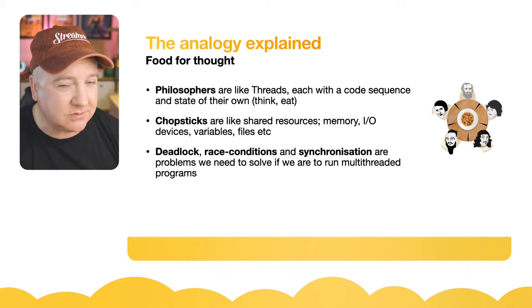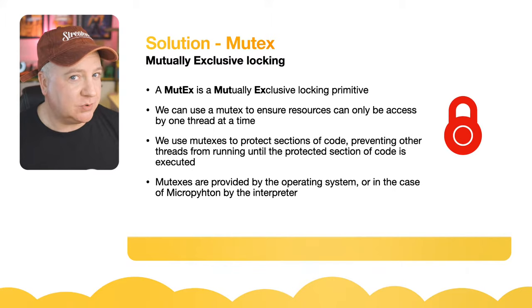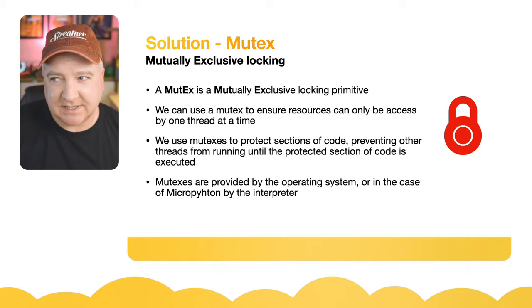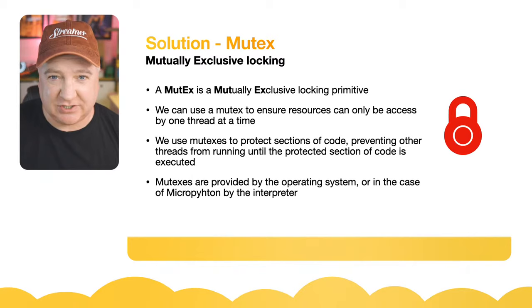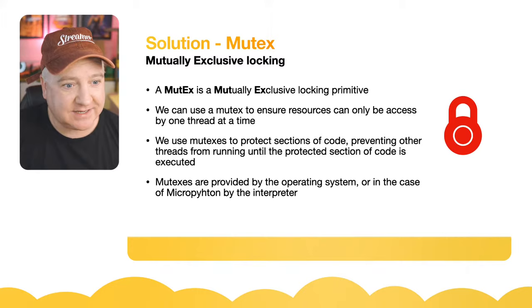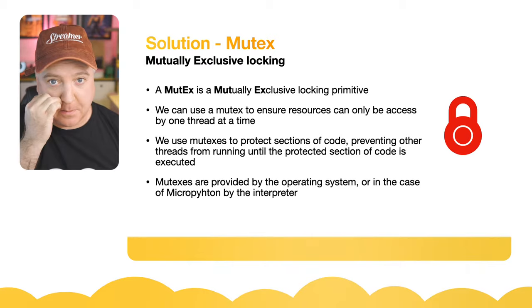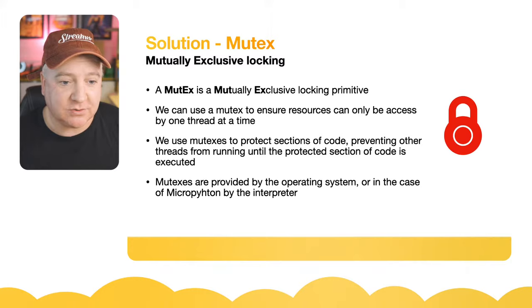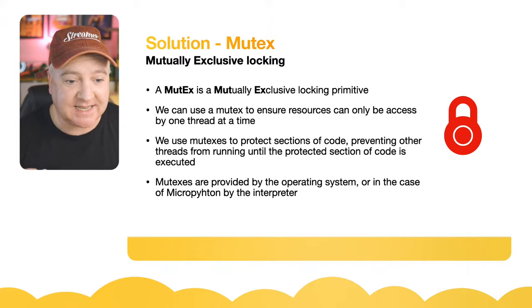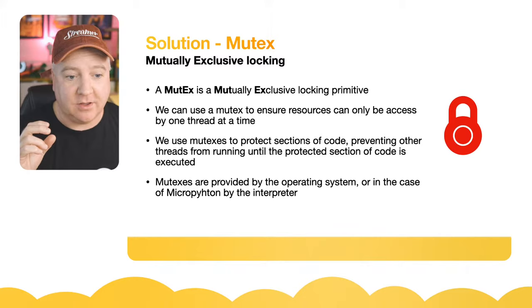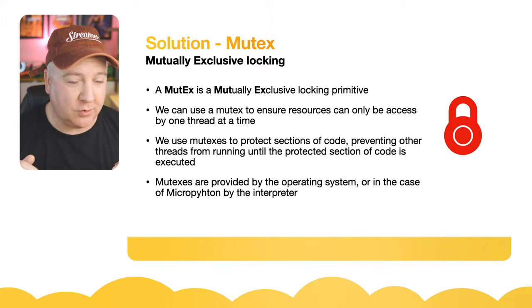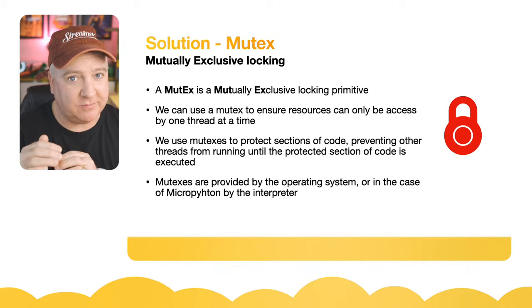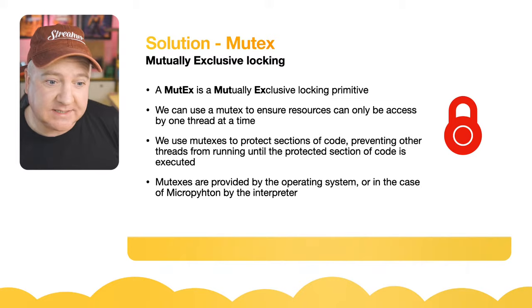With MicroPython there isn't an operating system, so we need to ensure our programs are thread-safe. Damien George, who wrote MicroPython, has done a fantastic job - your device won't crash if you break the rules, but you'll get weird results accessing the same variable simultaneously. The solution is called mutexes - also known as semaphores, which are a more granular version. A mutex stands for mutually exclusive, and is a primitive used in multi-processing. We use mutexes to protect critical sections of code, preventing other threads from running until that section executes.